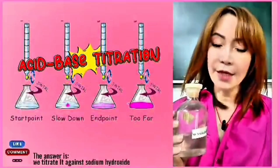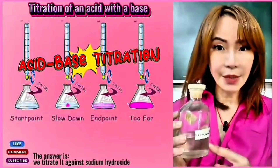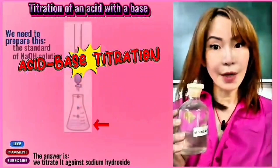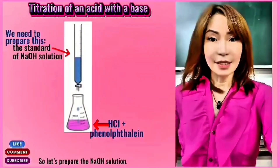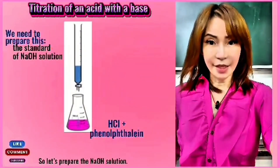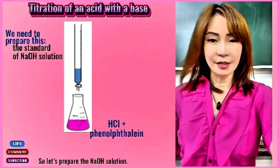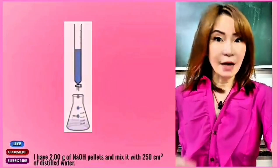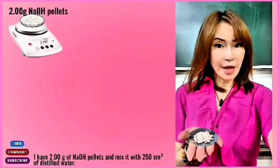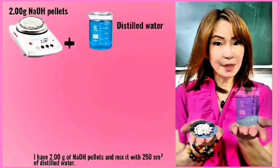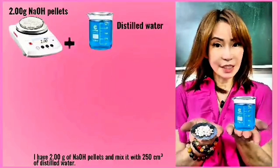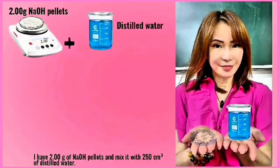The answer is we titrate the hydrochloric acid with NaOH. So let us prepare the NaOH solution. We have two grams of NaOH pellets dissolved in 250 cubic centimetres of distilled water.